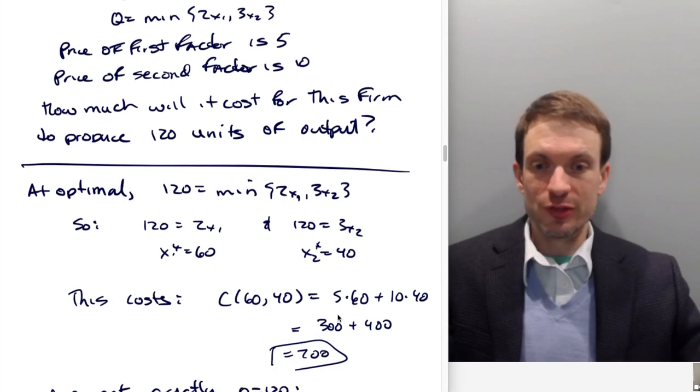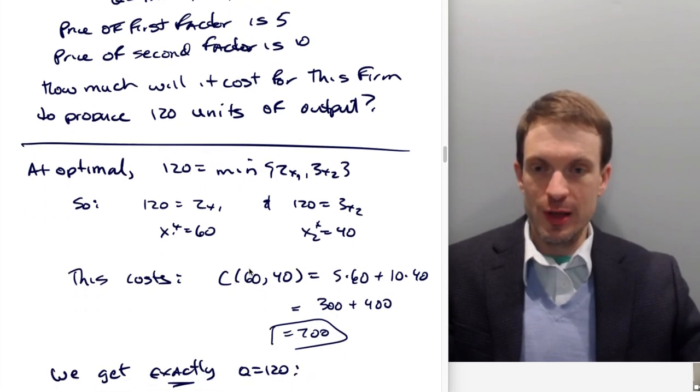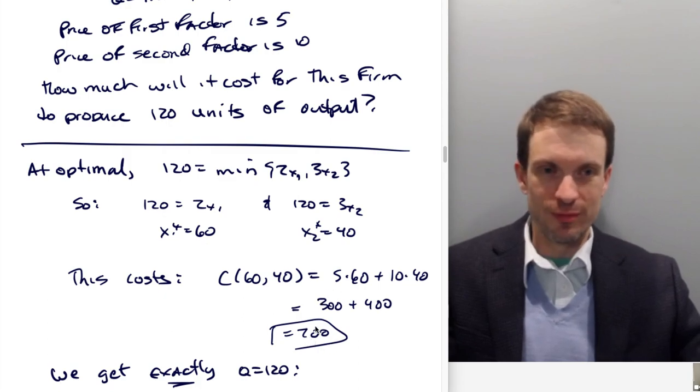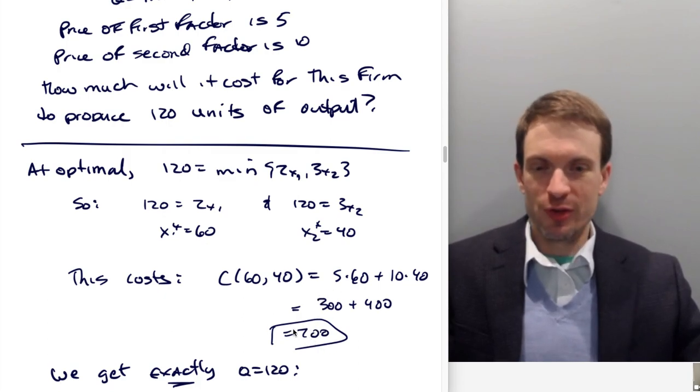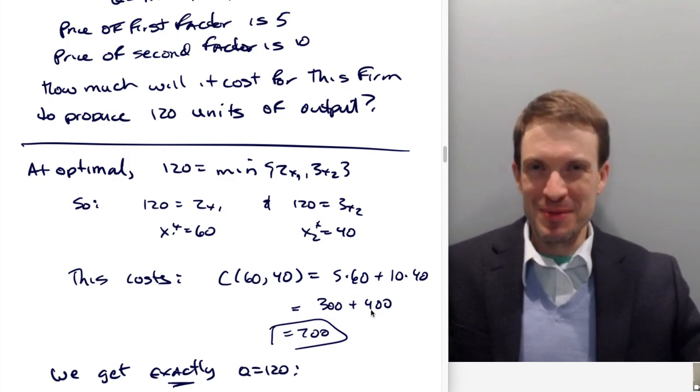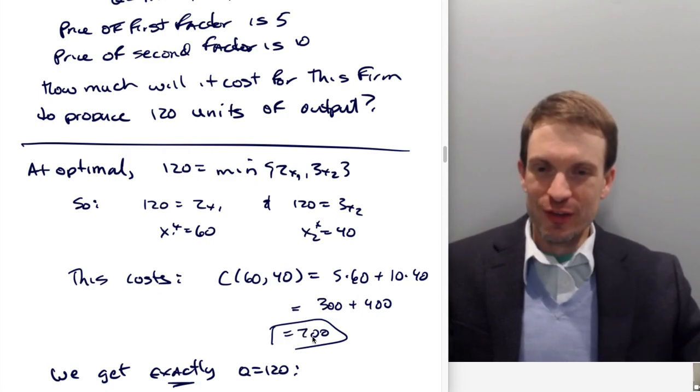What's this going to cost us? Well, the costs of this input bundle, right, 60 units of factor one, 40 units of factor two is just going to be the wage times our use of input one plus the rental rate of capital times the use of factor two. So 300 plus 400 is 700. Can't read my writing. So 300 plus 400. That should be independent of my ability to add. Anyway, so 700, right? Cool.